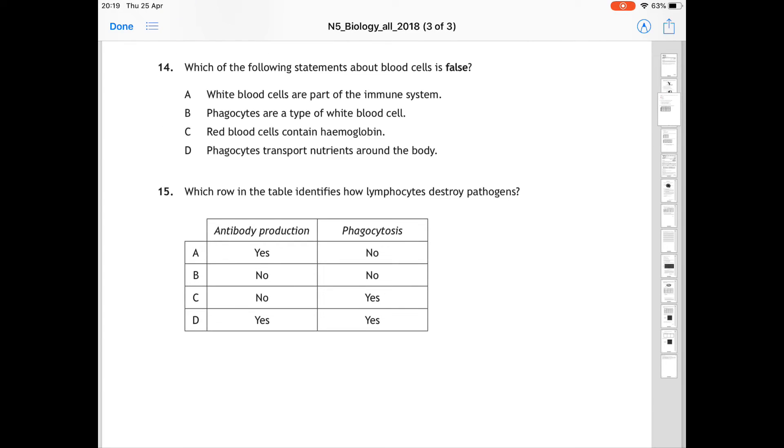For 14, it is asking you which of the following statements about blood cells is false. So which of these is incorrect? White blood cells are part of the immune system. That is true. Phagocytes are a type of white blood cell. That is also true. Red blood cells contain hemoglobin. That's true. And phagocytes transport nutrients around the body. That is incorrect. Phagocytes do not do that. So the correct answer for 14 is D.